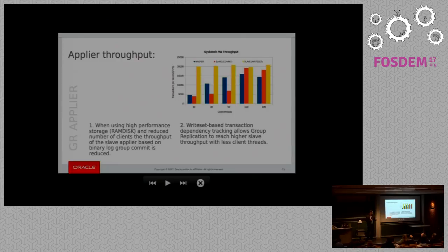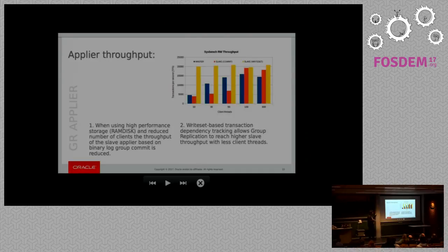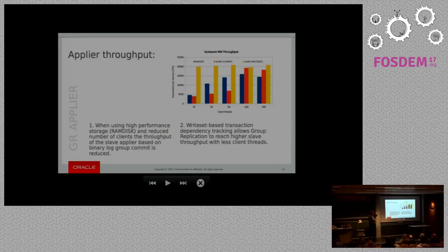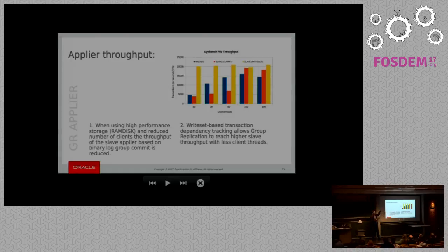With standard asynchronous replication, if you have very fast storage and only a few threads, group commits will be very small — only a few transactions commit together — giving little parallelism on the slave applier. But if we use write-set information from Group Replication, we don't need the group commit to decide what needs to be parallel. So even with only a few threads we can already get a lot of slave applier throughput. This is one of the key benefits and it's something that should reduce lag in situations where replication lag is currently a problem.